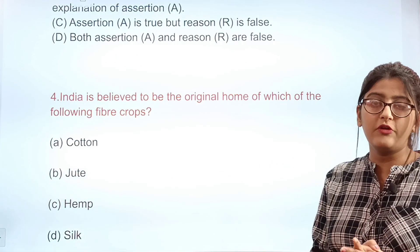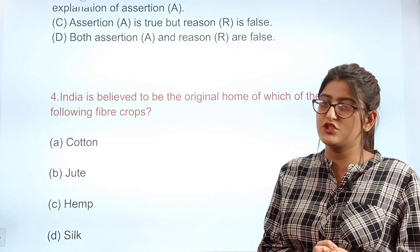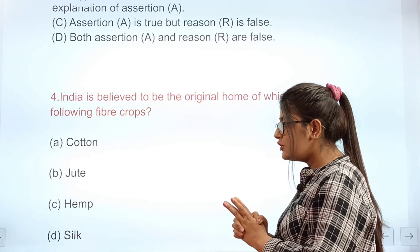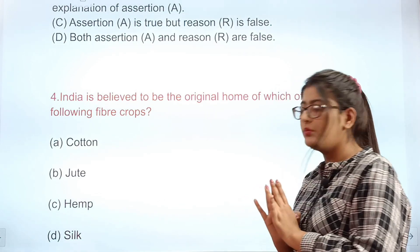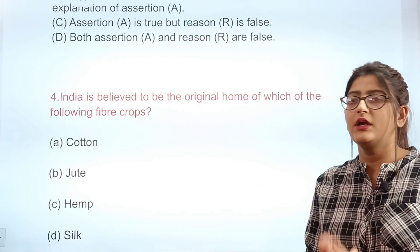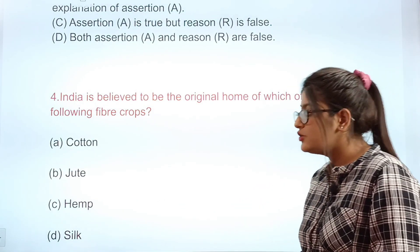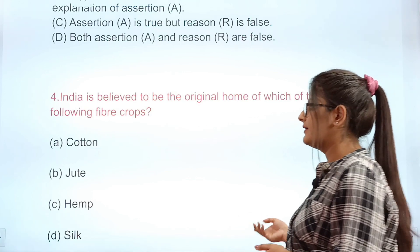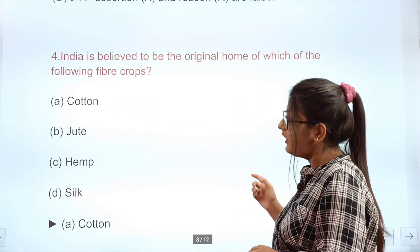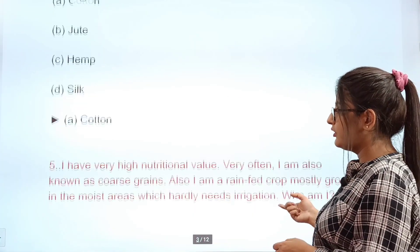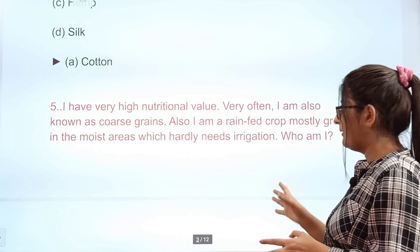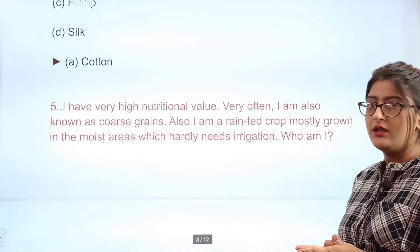Question: India is believed to be the original home of which fiber crop? Options: A cotton, B jute, C hemp, D silk. The correct answer is A — cotton.